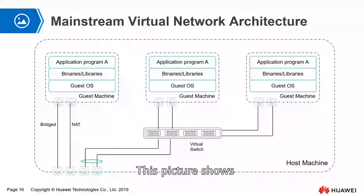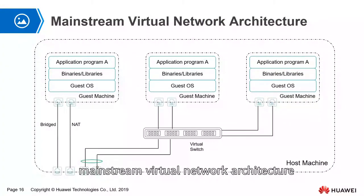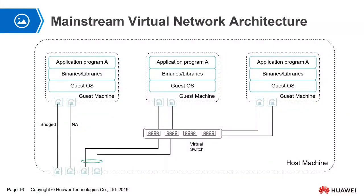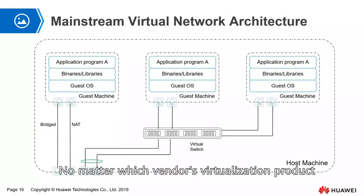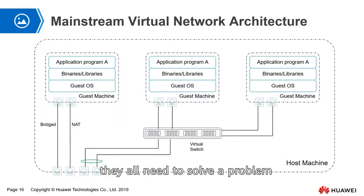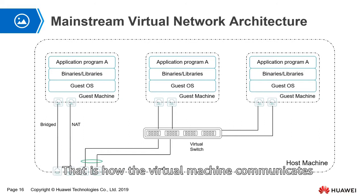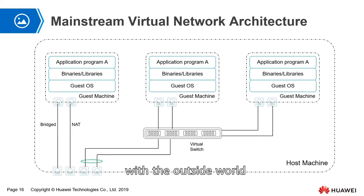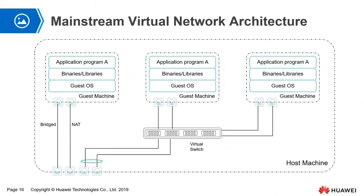This picture shows mainstream virtual network architecture. No matter which vendor's virtualization product, they all need to solve a problem: how the virtual machine communicates with the outside world through the physical network. There are three common ways.